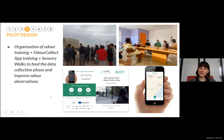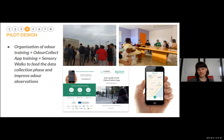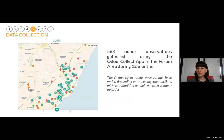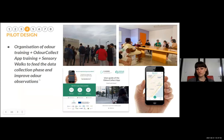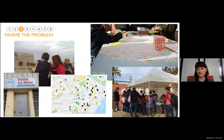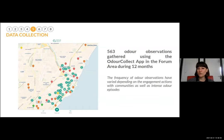We organized odor trainings to understand the odors present in the area and trained people to use the app, discussing how the problem affected citizens. We did sensory walks to gather data together with citizens. We gathered more than 560 odor observations during 12 months. The frequency of observations varied depending on engagement actions — when we were doing community engagement or participating in local events, we had lots of observations. So it's quite important to keep on with engagement.